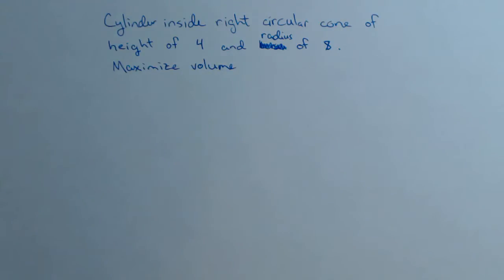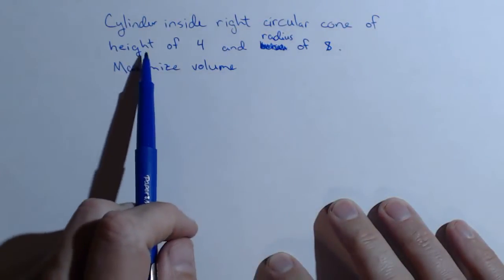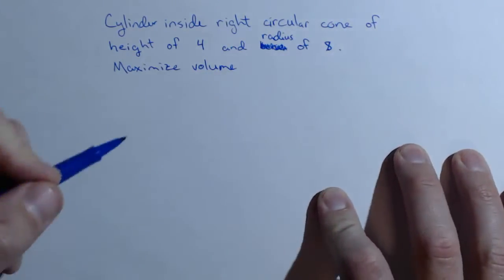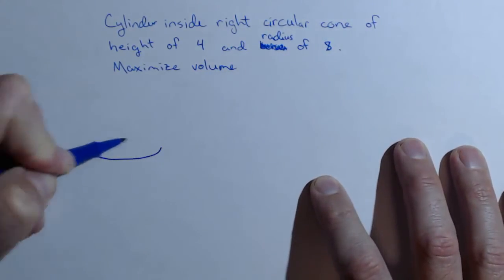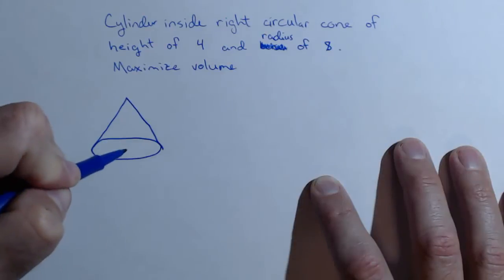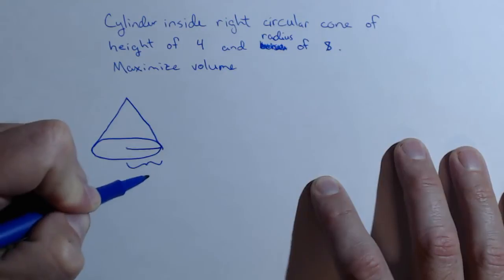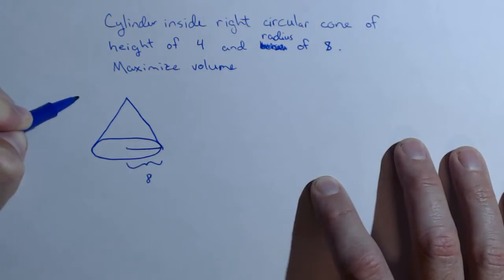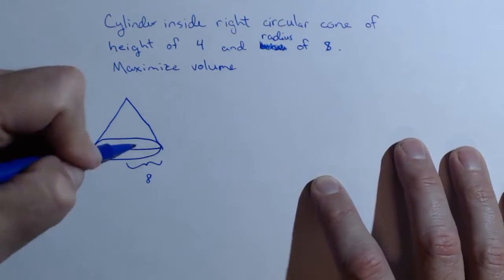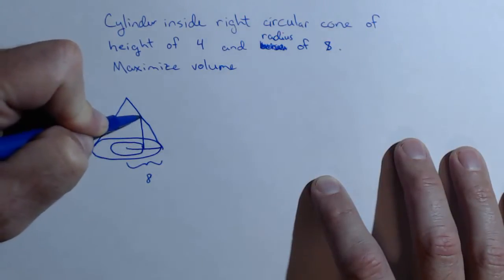In this video, we're going to maximize the volume of a cylinder that's inside a right circular cone. The height of the cone is 4 units and the radius of the cone is 8 units. It's always good to draw a picture of what's going on so we can set up a function to model this situation. Here's our cone — the radius of the base is 8 units and the height is 4 units, and we're going to be inscribing some cylinder inside.